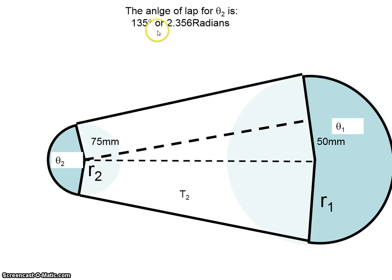The angle of lap is 135 degrees, or 2.356 radians. From the formula, the ratio of tension T1 to T2 is equal to e to the power of μθ cosec α.